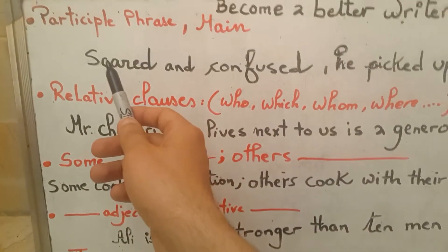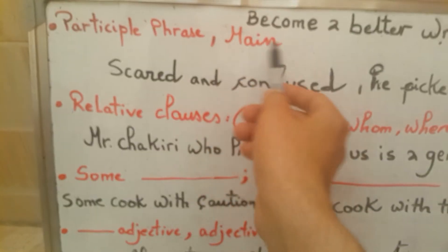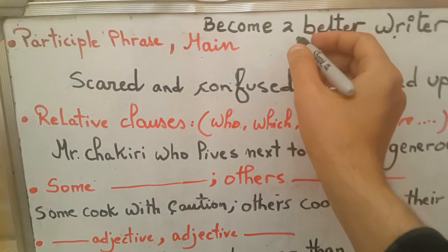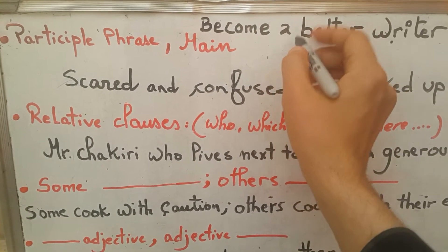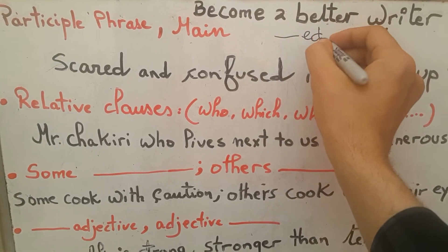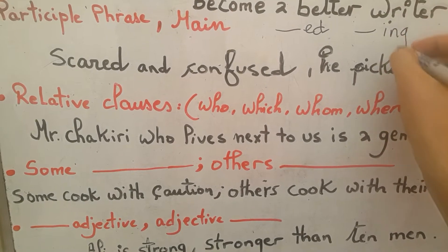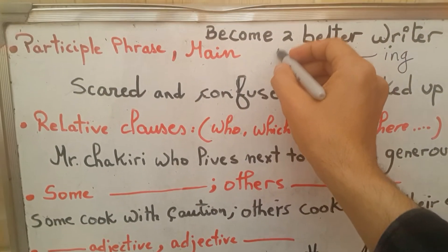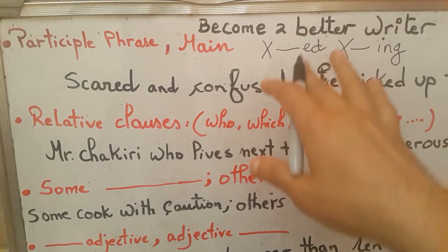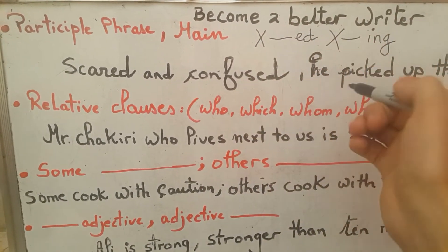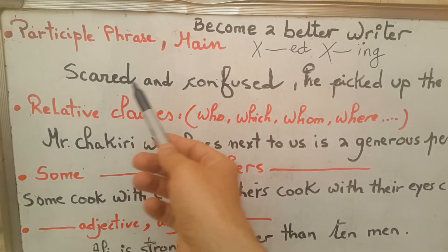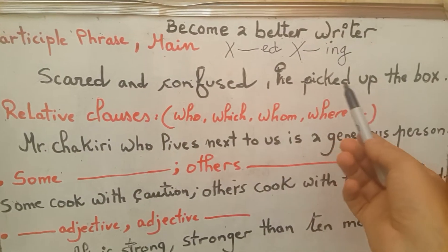We kick off with the first one: a participle phrase followed by a main clause, also called an adjectival phrase. A participle phrase is a verb that ends in '-ed' or '-ing', it does not have a subject, and it is a verb that stopped being a verb and becomes an adjective. For example: 'scared and confused, he picked up the box.'